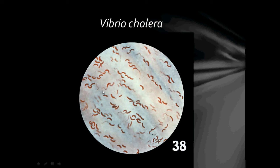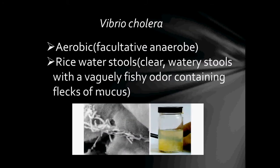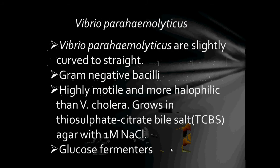As you can see, they are slightly curved, and they also have a monotrichous flagella, meaning they have a flagella at one pole. Vibrio cholerae are aerobic facultative anaerobes. They cause infections that result in rice water stools, which are clear watery stools containing flecks of mucus with a vaguely fishy odour.